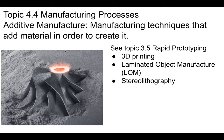Let's talk about two different kinds of manufacturing. First, there's additive manufacturing — techniques that add material in order to create a product. We already talked about this in the rapid prototyping topic. This includes things like 3D printing, laminated object manufacturing, and stereolithography — essentially adding material to build it up.